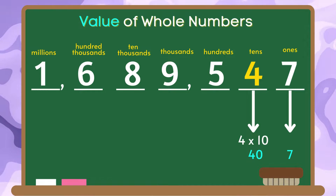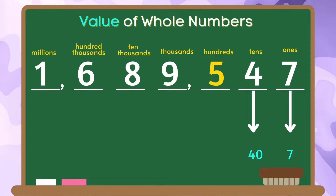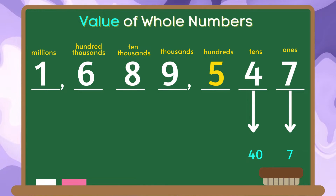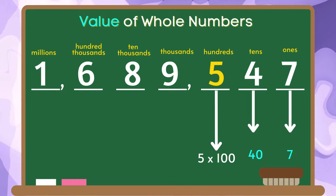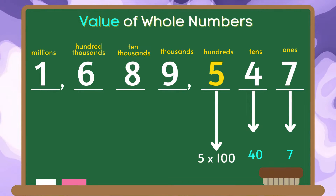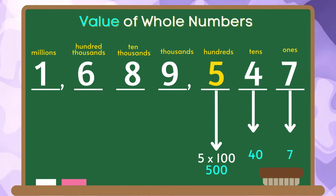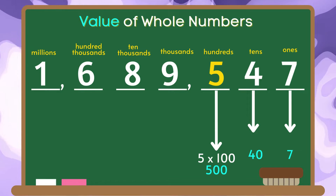The place value of the digit 5 in this number is hundreds. We are going to multiply the digit 5 by 100. 5 times 100 is equal to 500. Therefore, the value of the digit 5 is 500.